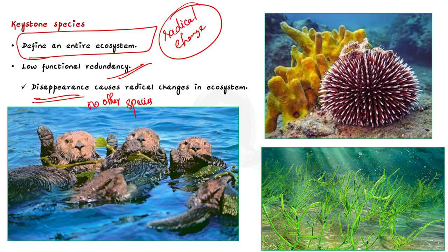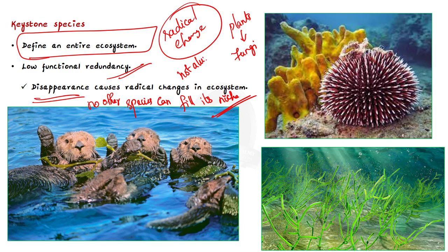Consequently, the ecosystem would be forced to change radically, allowing new or possible invasive species to populate the habitat. If such a thing happens, then the ecosystem will be affected significantly. Remember, any organism from plants to fungi may be a keystone species. They are not always the largest or most abundant species in an ecosystem. A keystone species is often, but not always, a predator — even herbivores can be a keystone species.